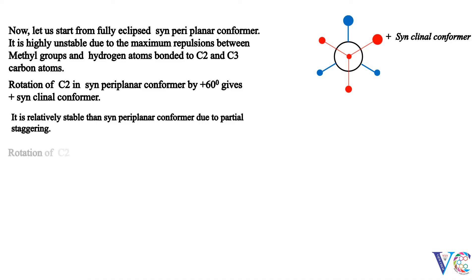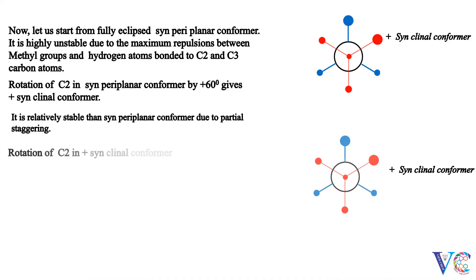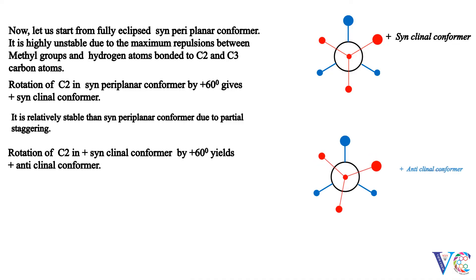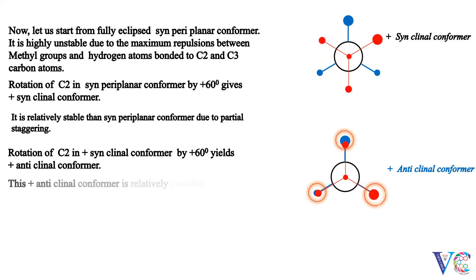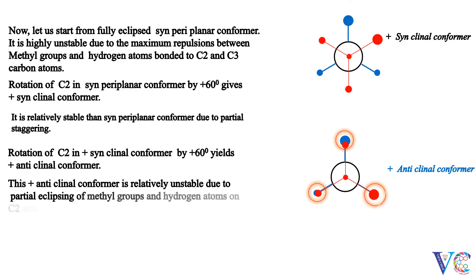Rotation of C2 in the plus synclinal conformer by plus 60 degrees gives the plus anticlinal conformer. This plus anticlinal conformer is relatively unstable due to partial eclipsing of methyl groups and hydrogen atoms on C2 and C3 carbon atoms.